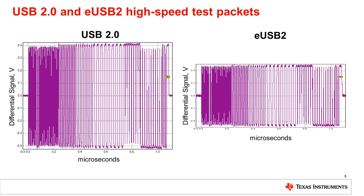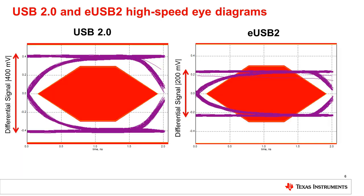Here's a typical USB 2.0 high-speed test packet along with an eUSB2 high-speed test packet. As you can see, both USB and eUSB2 high-speed test packet data content is identical. But if you look at the differential signal amplitude, the eUSB2 packet is at about half the swing of the USB 2.0 packet. If we look at a USB high-speed eye diagram and an eUSB2 high-speed eye diagram, you can see the similarities — both have the same eye-opening shape with respect to bit timing and slew rate when viewed using the traditional USB 2.0 near-end eye compliance mask.